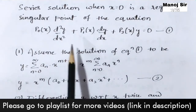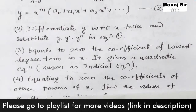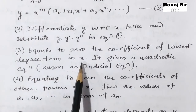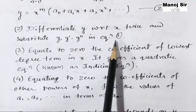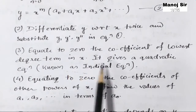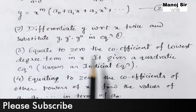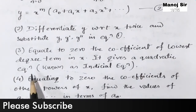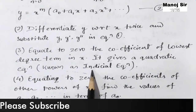Equation number 1 is this. We need to substitute y-double-dash, y-dash, and y into it. Third step: equate to 0 the coefficient of the lowest degree term in x. After substituting y-dash and y-double-dash in equation number 1, we check the lowest degree term in x whose coefficient is equated to 0. It gives a quadratic equation known as the indicial equation.